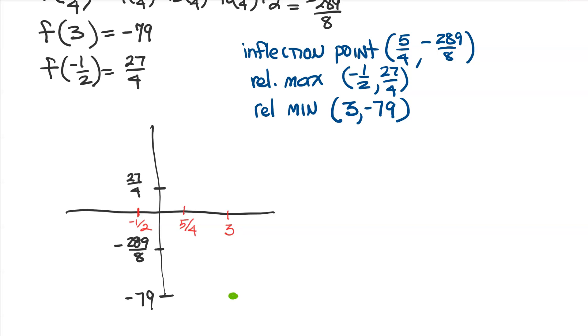So, I've got 3, and then my negative 79. I've got 5 fourths, and my negative 289, and then negative 1 half, and then 27 over 4. Okay, I'm kind of right on there. Maybe I can move that 27 over 4 over. So, this is 27 over 4, and then this point will be right here.